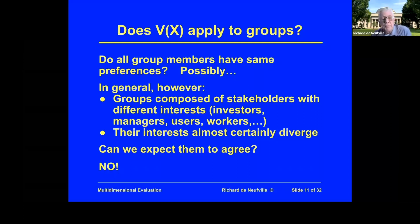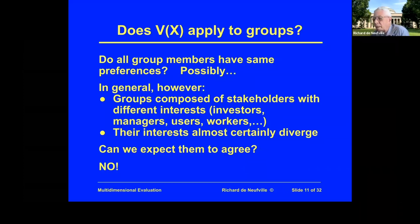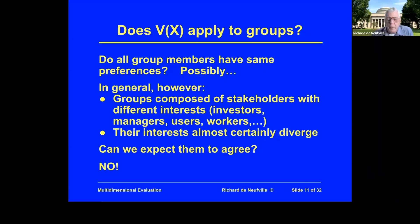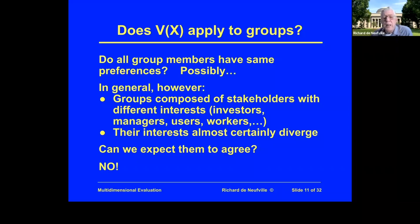For example: investors want the most return; managers want more power and glory for themselves; users want a good product; workers want better working conditions and less effort. Their collective interests almost certainly do not agree. So we can't expect them to agree — that is the point.